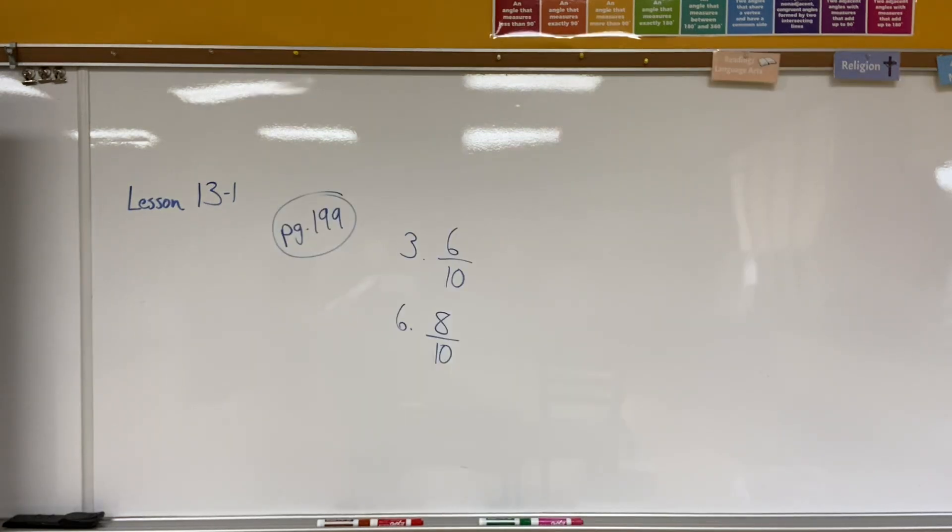All right, my fourth grade friends, if we take a look at page 199 in our workbook, you'll be seeing that we're doing practice problems number three and number six. The directions say write the equivalent fractions in hundredths. So you're going from six tenths and moving it to hundredths. For number six, you're going from eight tenths and moving it to hundredths. If you have any questions on how equivalent fractions and renaming tenths as hundredths work, let me know when you come to class tomorrow.